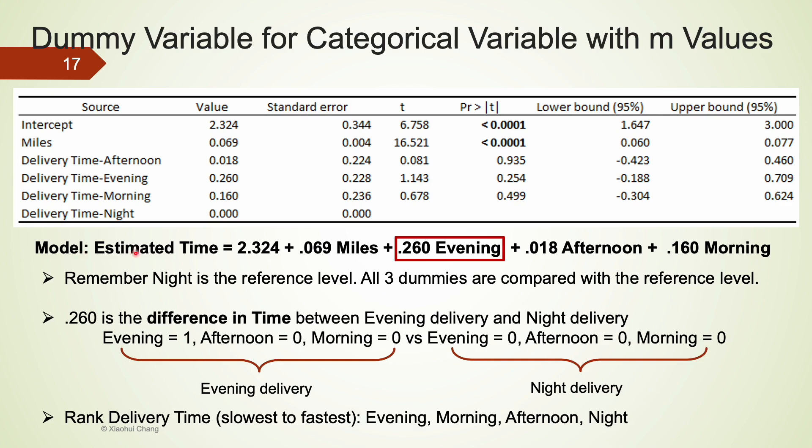We try to interpret the slope coefficients, especially those for the dummy variables. The slope coefficient for evening deliveries is 0.26. 0.26 is the difference in time between evening deliveries and the reference night deliveries. That means holding all other variables the same. An assignment that was delivered in the evening is going to take 0.26 hours more than another assignment that was delivered at night. We can also see that on average, afternoon deliveries takes 0.018 hours. That's about a one minute more than night deliveries. We can rank delivery time from the slowest to the fastest. The evening deliveries takes the longest time, followed by morning deliveries, afternoon deliveries, the fastest deliveries are at night.